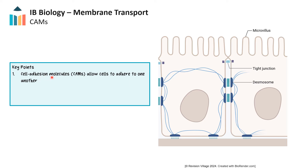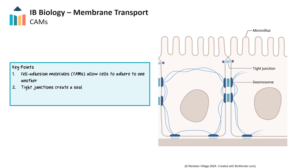Cell adhesion molecules, or CAMs, are essential for the organization and stability of tissues, as they enable cells to adhere to one another and form structured networks. These molecules mediate specific interactions between cells, allowing them to connect and communicate, which is crucial for tissue function and integrity. Different types of CAMs are specialized for various forms of cell-to-cell junctions. For example, some CAMs are involved in tight junctions, which create a seal between adjacent cells, preventing substances from passing between them — such as in the small intestine, where undigested nutrients leaking across the gut would be problematic. Others are used in desmosomes, which provide structural support by anchoring cells together, allowing tissues to stretch without breaking.